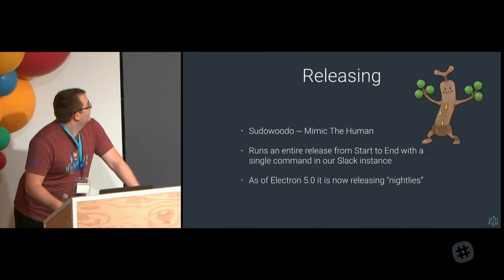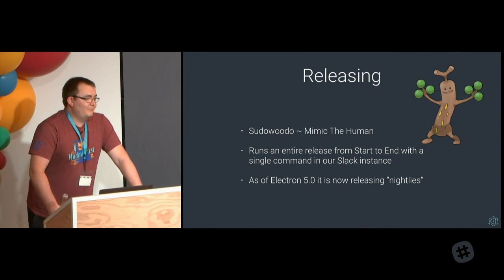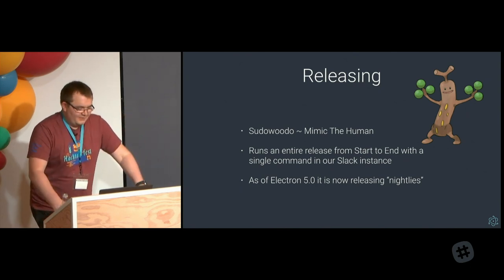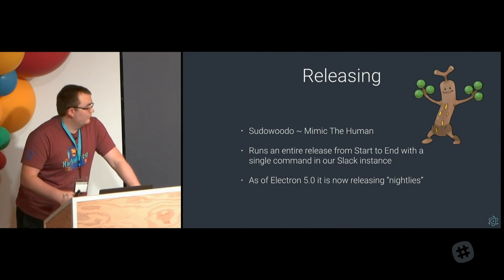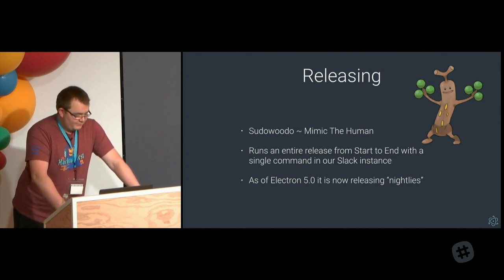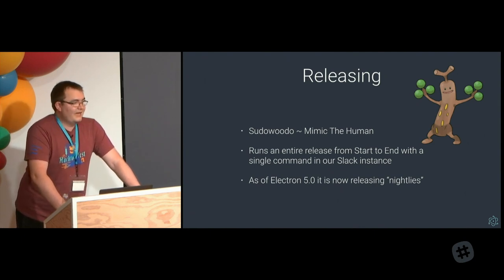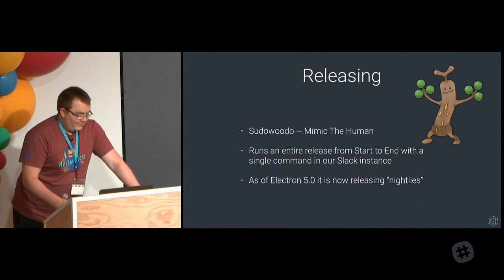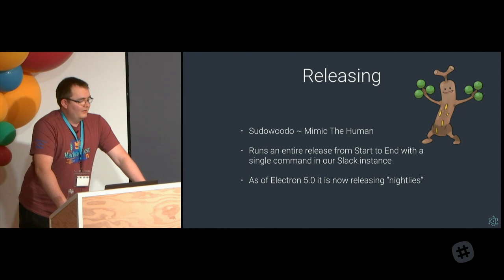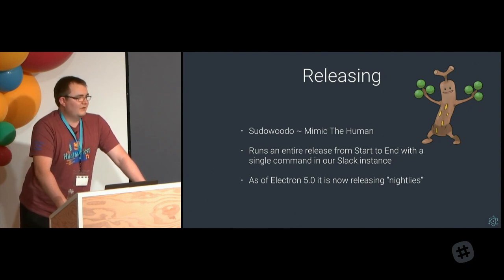Number two, and this is a more recent development: releasing. We made another bot called Sudowoodoo. For any Pokémon buffs out there, Sudowoodoo is a Pokémon with a single move called Mimic. We built this bot to literally do exactly what a human would do when releasing Electron — mimic the human, but do it all automatically. It will clone Electron, bump versions, trigger CI builds, publish a new GitHub release, generate release notes, and publish the NPM package. If everything goes well, releases now only take an hour or so from start to finish — we run one command in Slack and off the bot goes. Thanks to this automation, we can now start releasing nightly builds of Electron. You can check out the Electron-nightly package on NPM — there's already a 5.0 nightly on there.